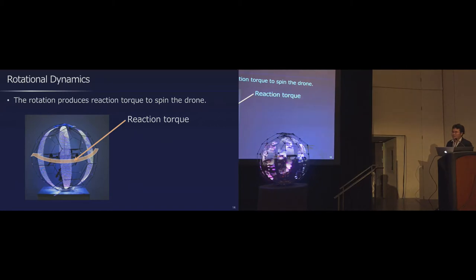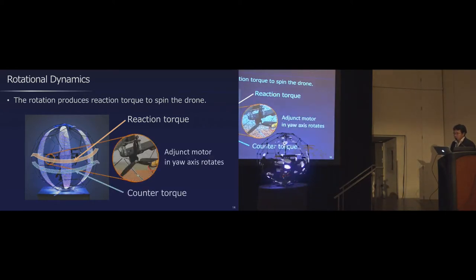The principle of ice sphere is simple, but it is difficult to mount POV display on the drone. Because when LED tapes rotate, reaction torques trying to spin the drone are generated. If you let the drone fly in this condition, the drone flies in spiral trajectory and becomes uncontrollable and crashes. So we used two adjacent motors in yaw axis. These motors generate counter torque against reaction torque and stabilize the drone. As a result, ice sphere can fly straight.